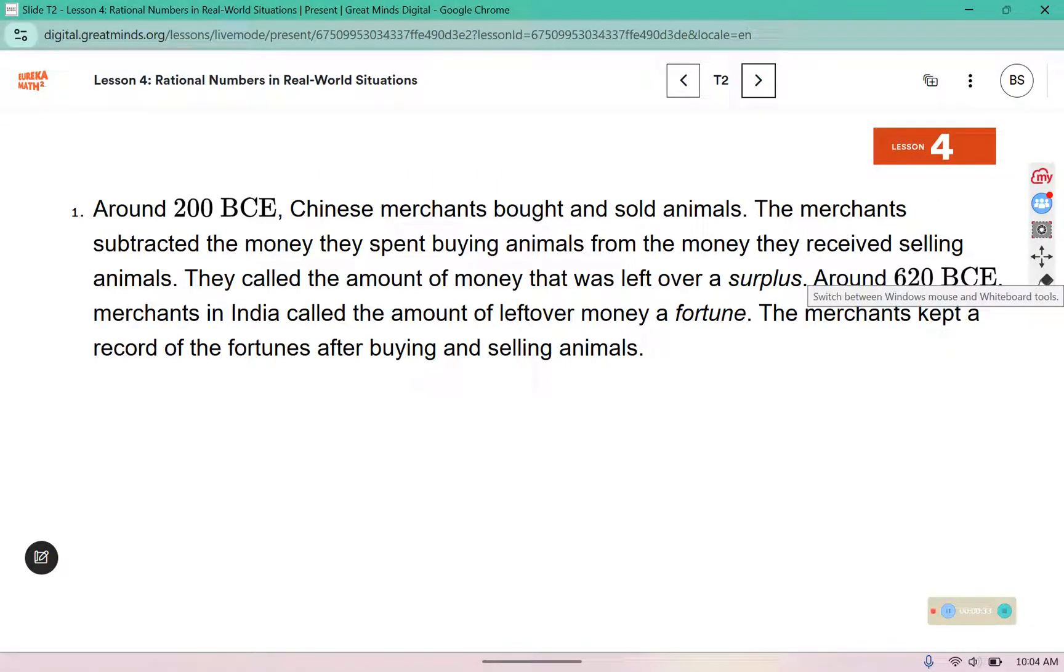Around 200 BCE, Chinese merchants bought and sold animals. The merchants subtracted the money they spent buying animals from the money they received selling the animals. They called the amount of money that was left over a surplus. Around 620 BCE, merchants in India called the amount of leftover money a fortune. The merchants kept a record of the fortunes after buying and selling animals.